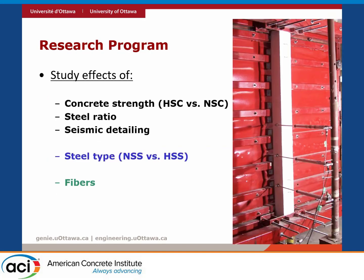Let's go over the research program. We tested columns under simulated blast loads and looked at these parameters. First, we wanted to see how high-strength concrete columns behave compared to regular normal-strength concrete columns — looking at concrete strength, longitudinal steel ratio, and seismic detailing. After that, we looked at the steel type: what if you replace the Grade 400 MPa steel with Grade 690 MPa steel? And finally, we looked at fibers.